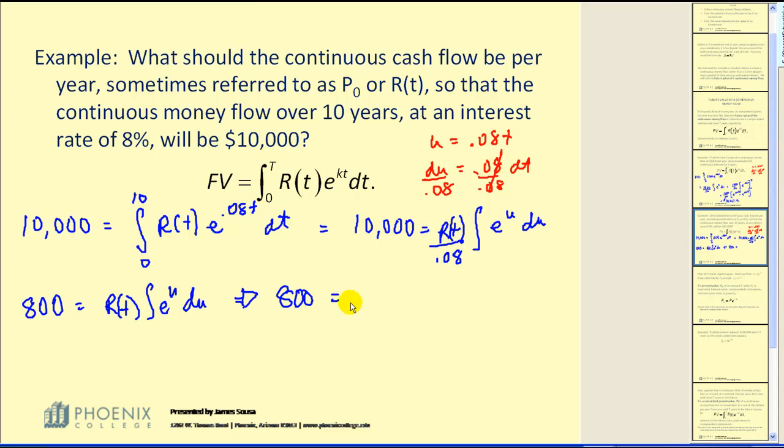Now we'll integrate. 800 would equal R of T times the antiderivative of E to the U is E to the U, which is actually E to the .08 T evaluated at ten and zero.